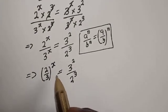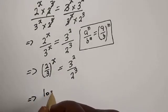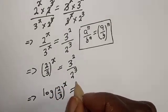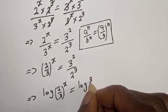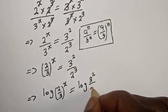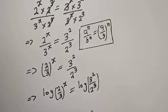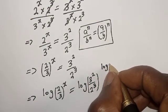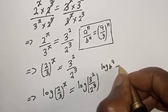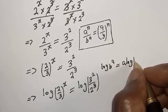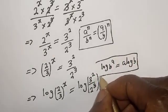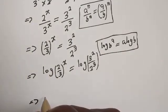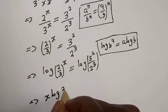From here, let's take the log of both sides. Log of 2 over 3 to the power of s is equal to log of 3 squared over 2 raised to power 3. Using the rule log of b raised to power a equals a log b, the left side becomes s log 2 over 3.